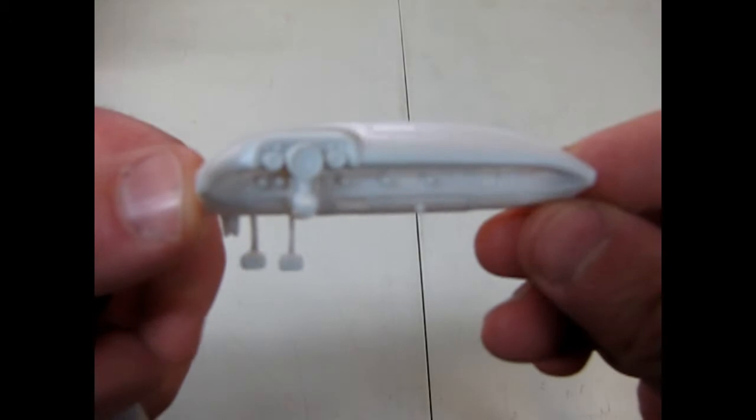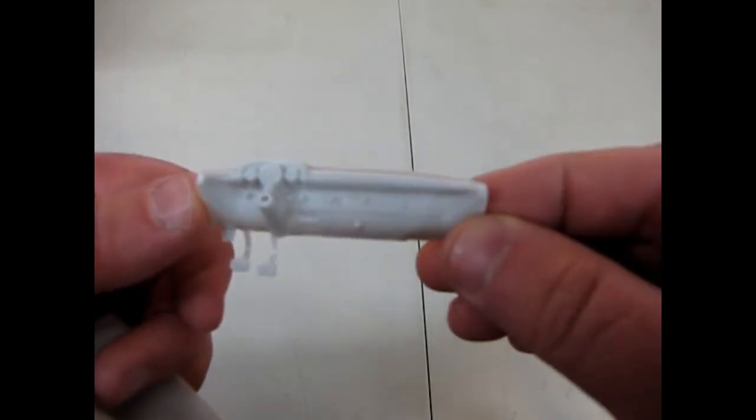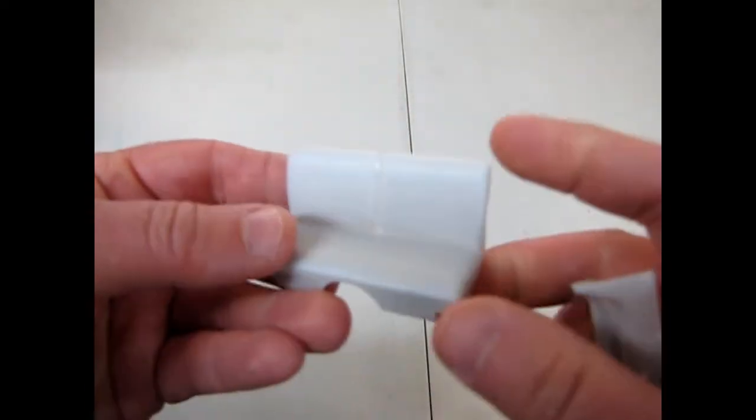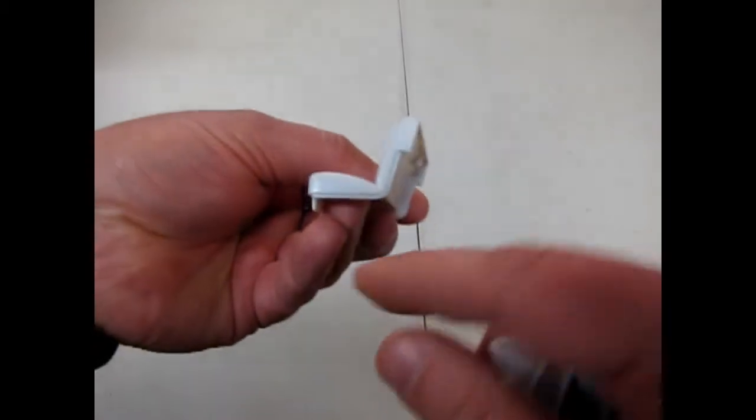And here we have the dashboard. You can see a very nice detail in there. As well as our seat. This is the front seat. You can see it's got the room for the side pieces.